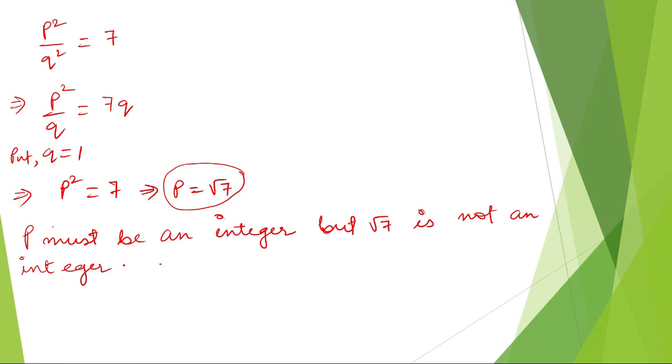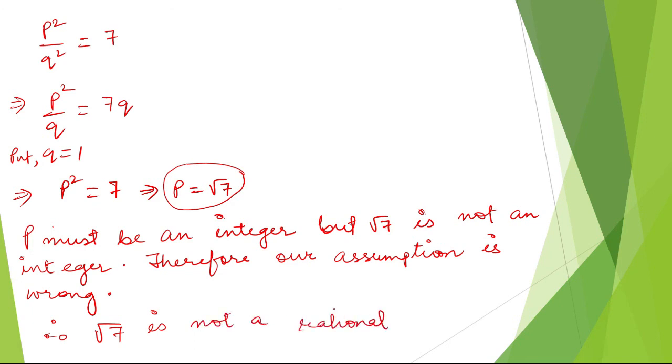Therefore, our assumption is wrong. So we can say that root 7 is not a rational number.